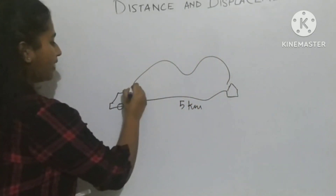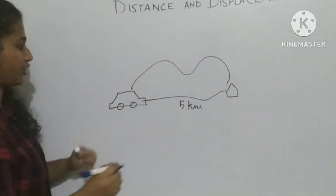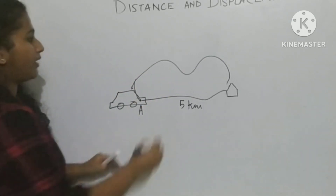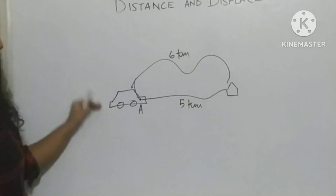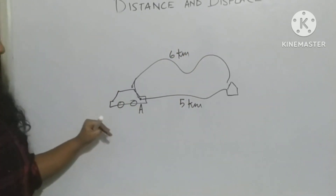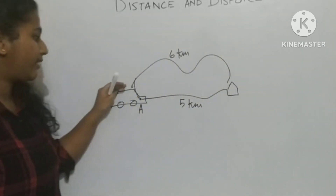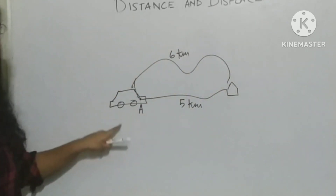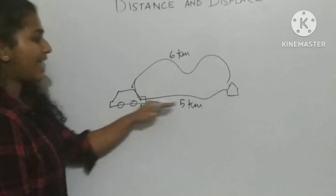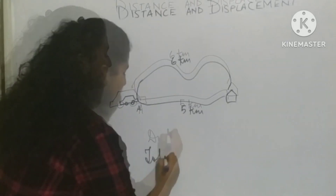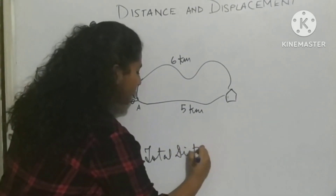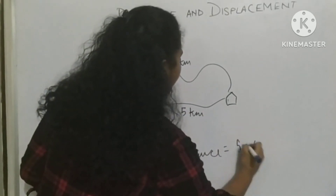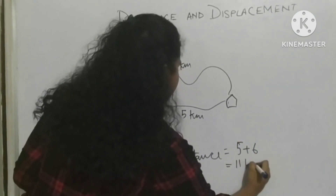Then I come back, taking another route, and return to the same position A. That return route is 6 kilometers. So the total distance I travelled — the total length of the path to go to the shop and return back home — is 5 plus 6, which equals 11 kilometers.